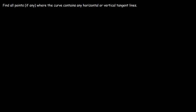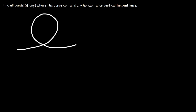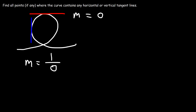In this video, we're going to talk about how to find all the points where a parametric curve may have a horizontal tangent line or a vertical tangent line. Whenever you have a horizontal tangent line, the slope is equal to zero. Whenever you have a vertical tangent line, the slope is undefined, which means there's a zero in the denominator of the fraction.